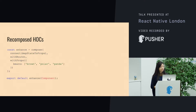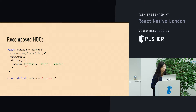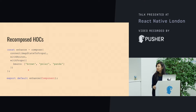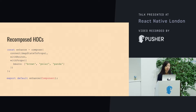This is what Recompose does. You've got a compose function, and now you can list all your higher-order components in order. It makes sense, it's readable — someone else can jump in on the project and know what's going to go on.